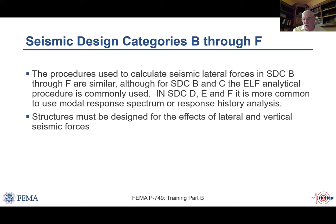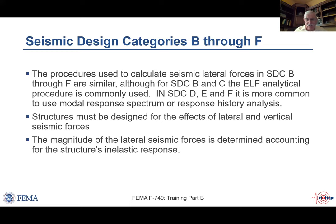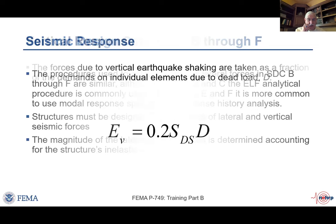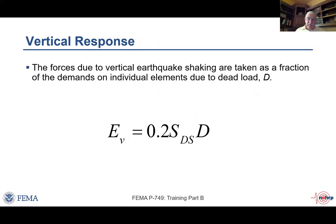The specified earthquake forces are typically lower than what the design earthquake will actually produce in a linearly responding structure, because of the benefits of nonlinear response. The magnitude of specified forces depends on the SDC and the Cd, R, and Ω₀ coefficients from Table 12.2-1. Structures must be designed for both lateral and vertical seismic forces. Vertical seismic response forces can be determined using vertical modal response or, more commonly, using the simple formula: vertical earthquake force = 0.2 × SDS × dead weight of the element. This applies to both elements of the SFRS and elements not part of the SFRS, since every part of the structure experiences vertical earthquake response forces.